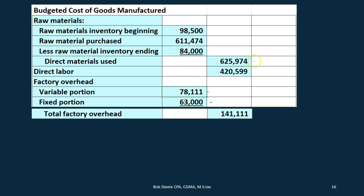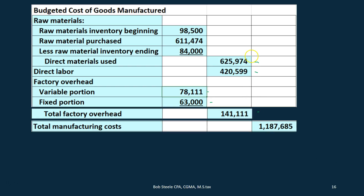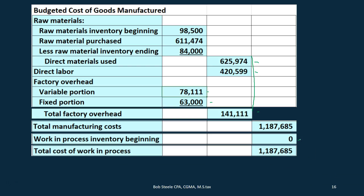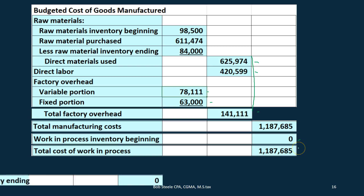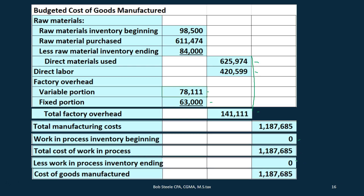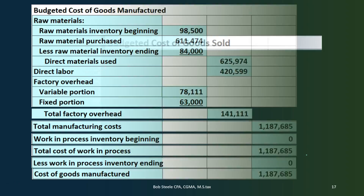Now we have our three components in the outer column: direct materials, direct labor, and factory overhead. We add those three up — $625,974 plus $425,99 plus $141,111 — giving us $1,187,685. Then we have work in process at the beginning, which is zero in this case, giving us the same total work in process. Work in process inventory ending is also zero here. That gives us the cost of goods manufactured of $1,187,685. The whole point of this is to use that number in the cost of goods sold calculation needed on the budgeted income statement.